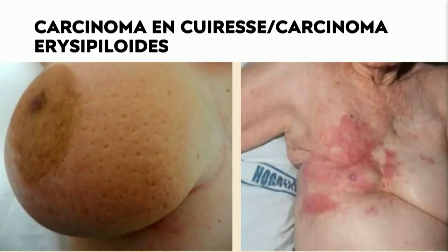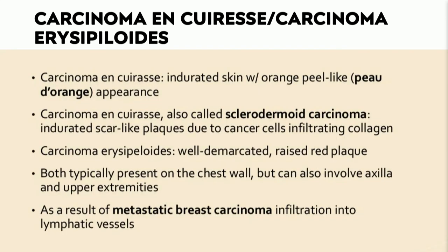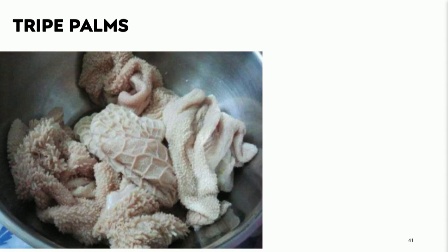When you see a mastitis-type presentation in a patient with or without known breast carcinoma — the so-called carcinoma en cuirasse or carcinoma erysipeloides — be concerned for underlying or locally metastatic breast carcinoma. There is usually an indurated, infiltrated, erythematous plaque infiltrating almost the entire breast region, typically resulting from lymphatic vessel infiltration by metastatic breast cancer.